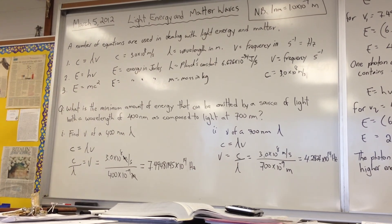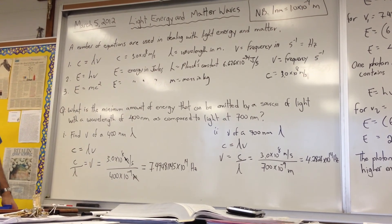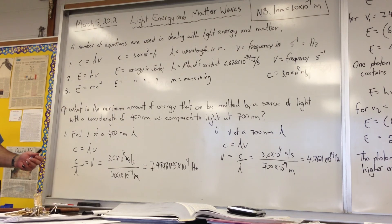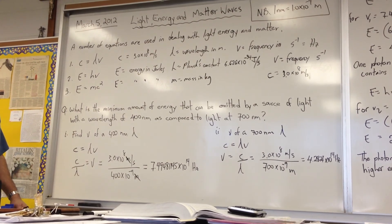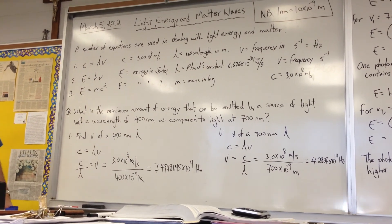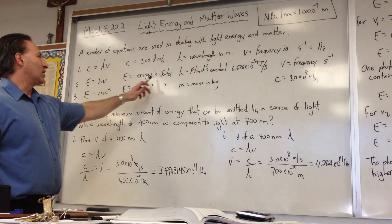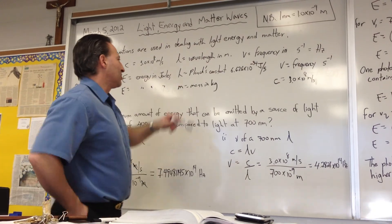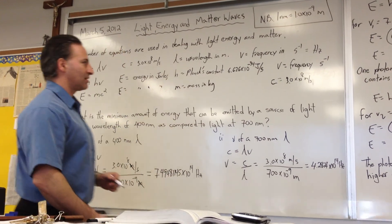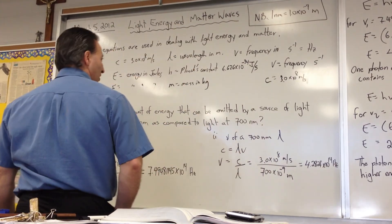The second equation, E is equal to h nu, relates to the amount of energy that can be carried by a photon. A photon represents the smallest increment of energy that a beam of light can carry — it's as though light energy were somehow pixelated. You can't go below one photon; you can't have half a photon. The energy is reported in joules. H represents Planck's constant, which has the value of 6.626 times 10 to the negative 34 joule-seconds, and nu is frequency in hertz.